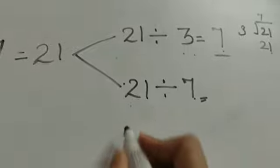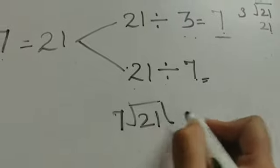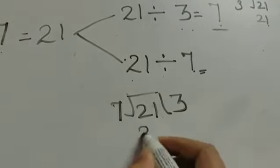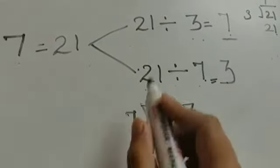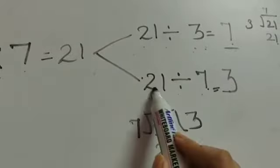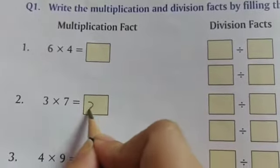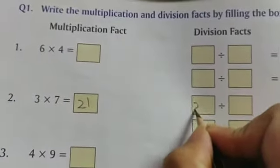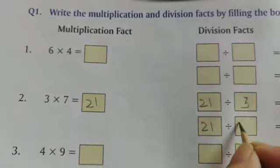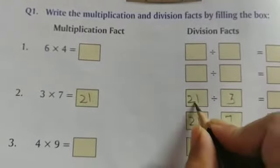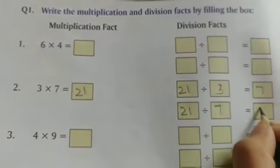Now, 21 divided by 7. 7 ones are 7, 7 twos are 14, 7 threes are 21. So, 21 divided by 7 is equals to 3. So, 21 divided by 3 is equals to 7, or 21 divided by 7 is equals to 3, because 3 sevens are 21.